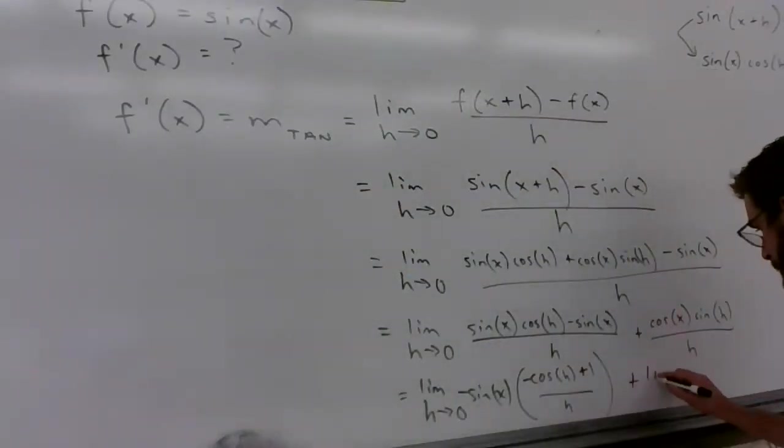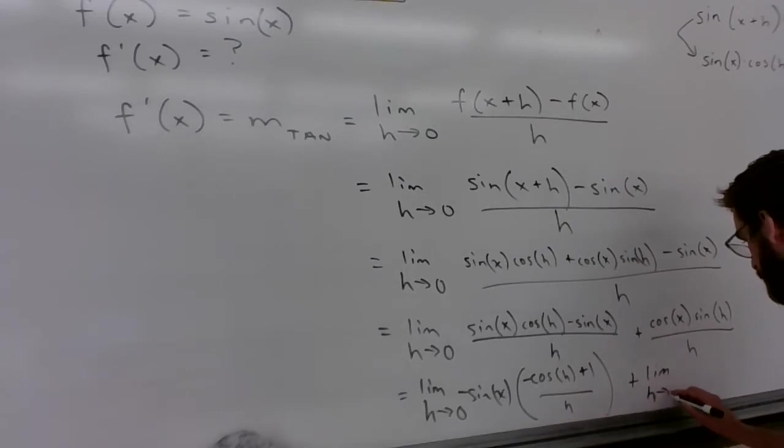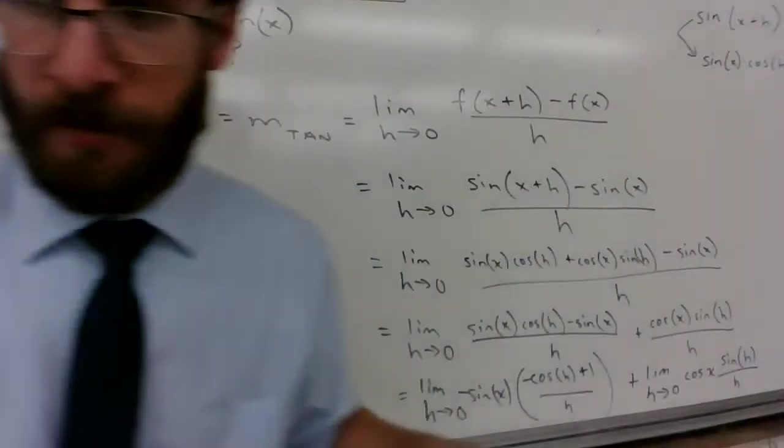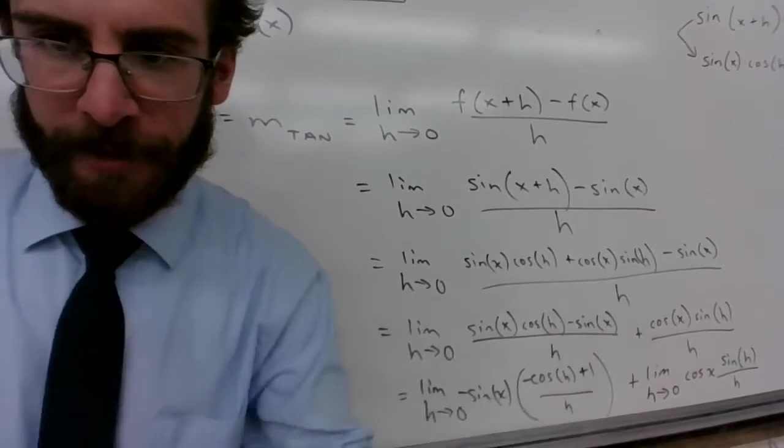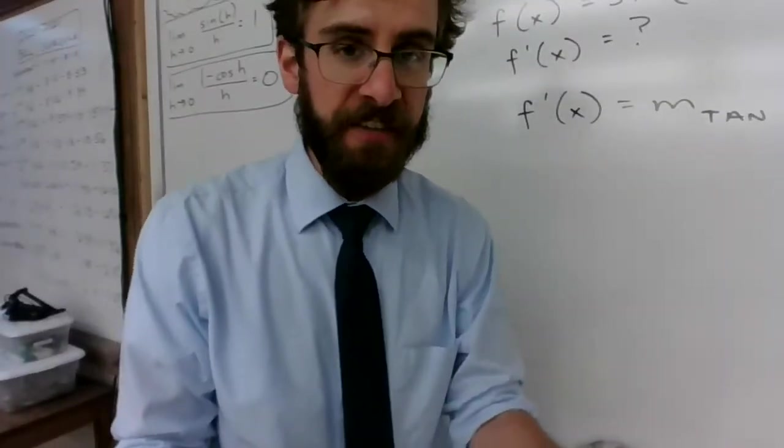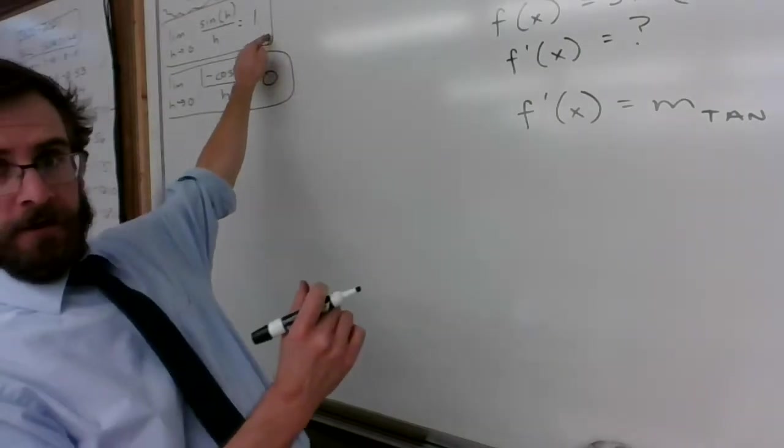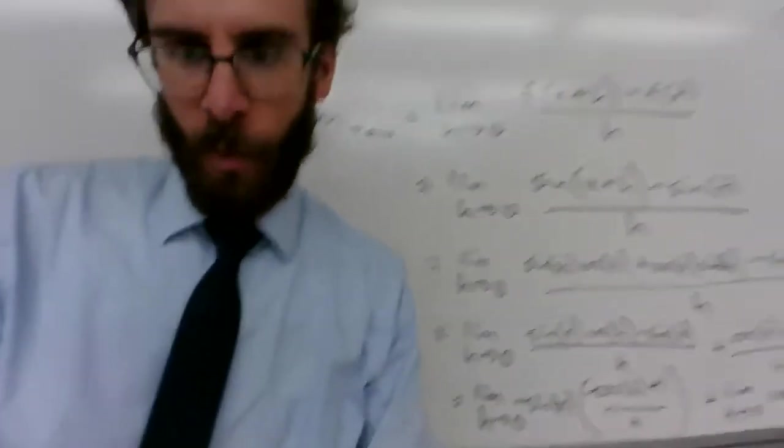So I'm going to distribute the limit through addition. So this is plus the limit as h approaches zero of cosine of x times sine of h over h when the limit approaches zero. Sine of h over h when the limit approaches zero. It equals one. Okay. We're getting somewhere now.